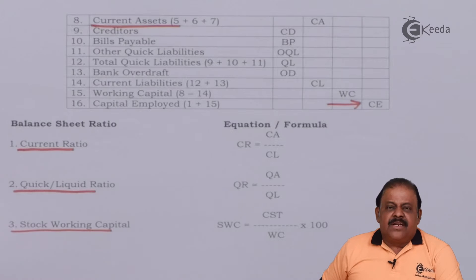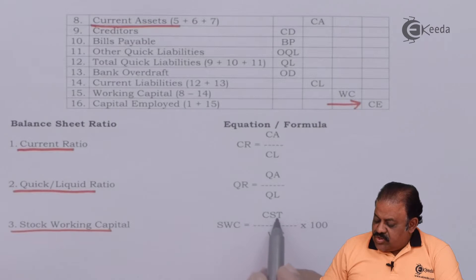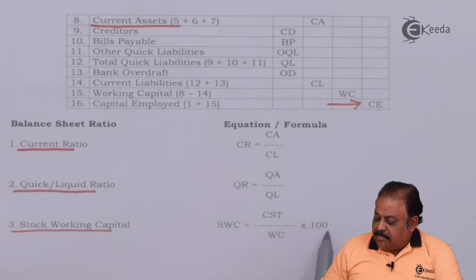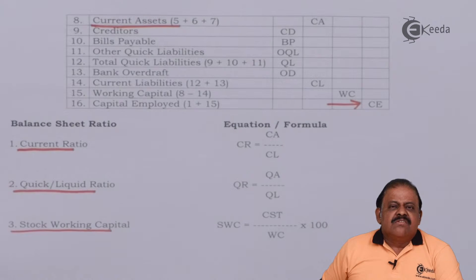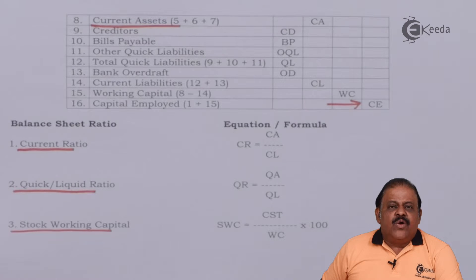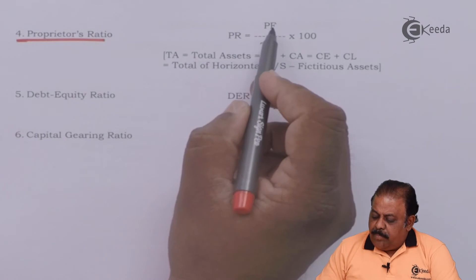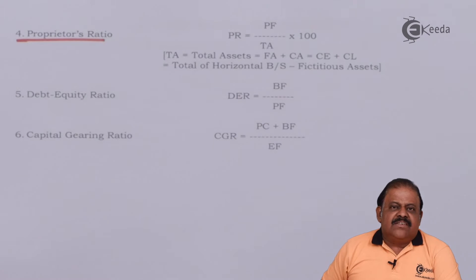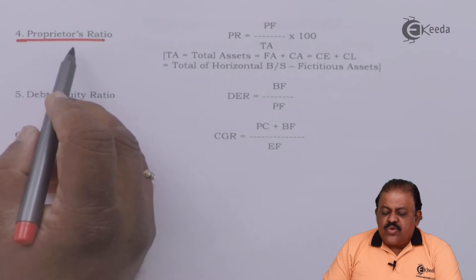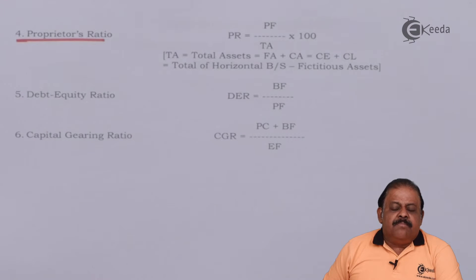Stock to working capital ratio is closing stock divided by working capital, multiplied by 100. This ratio shows the management of working capital by the business and also shows inventory control of the company. The proprietary ratio is proprietors' fund divided by total assets, where total assets means fixed assets plus long-term investments plus current assets. This ratio shows the long-term solvency position of the company.